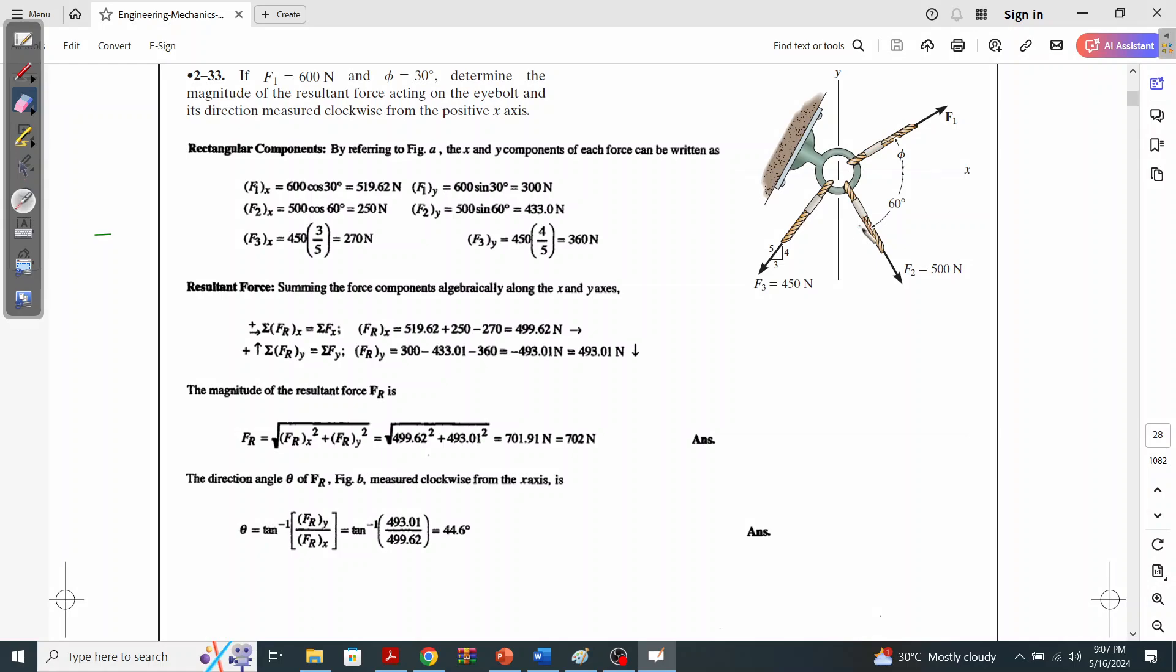These forces are F1, F2, and F3. F1 is making an angle phi which is basically 30 degrees, F2 is making an angle of 60 degrees with the x-axis, and F3 is making angles in terms of slopes.